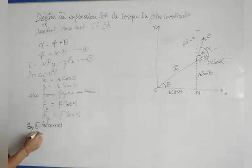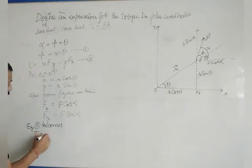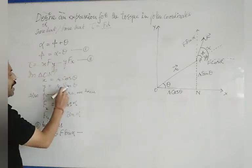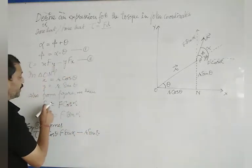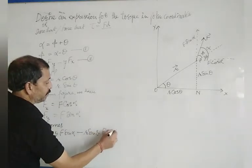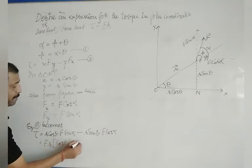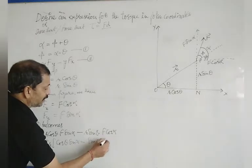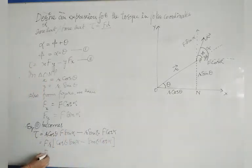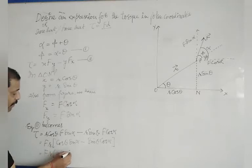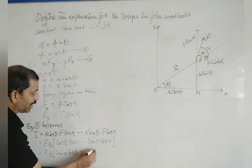Tau is equal to, x is R cos theta into Fy which is F sin alpha, minus y which is R sin theta into Fx which is F cos alpha. Now from these, F·R is common, so we get F·R times cos theta sin alpha minus sin theta cos alpha. We can also write this as F·R into sin alpha cos theta minus cos alpha sin theta.